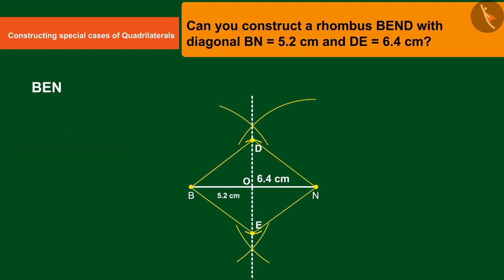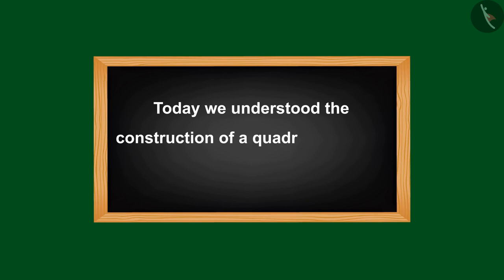BEND is a desired rhombus. You can confirm this with the help of scale and you will see that all the sides of the quadrilateral are of equal measure. Today we understood the construction of a quadrilateral with the help of examples.